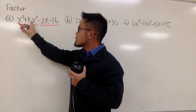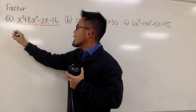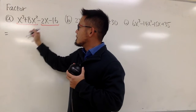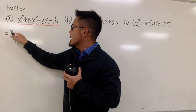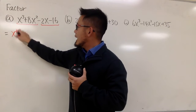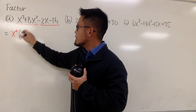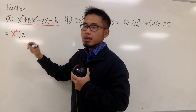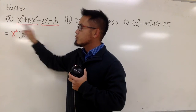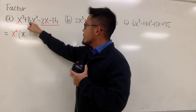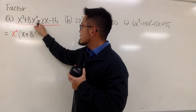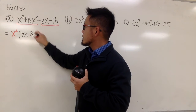Let's focus on x to the third power plus 8x squared. We see that we can only factor out the variable, namely x squared. We will have x to the first left because originally it was x to the third power but we took two of them out. And then we have plus 8, and x squared is already out.